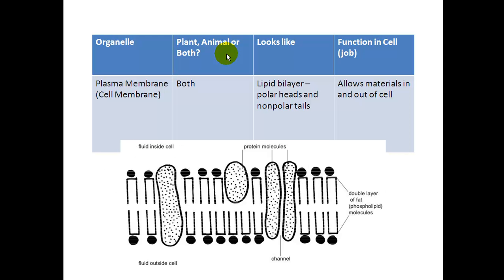So let's go through the different organelles. The first one is the cell membrane, also called the plasma membrane. If you want to make a little chart in your notes, that would be good because these are the components that you need to know for each of the organelles. You need to know the name of the organelle, you need to know if it's in a plant cell, an animal cell, or is it in both, what it looks like, and what its job is, what's its function in the cell.